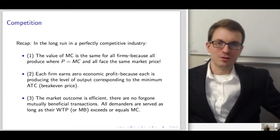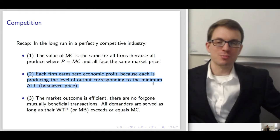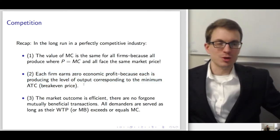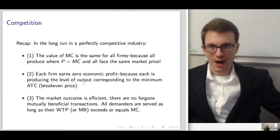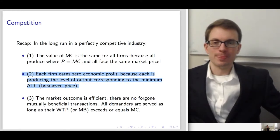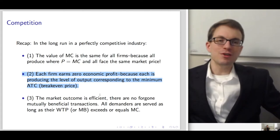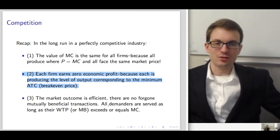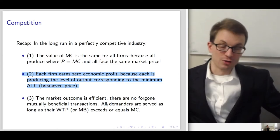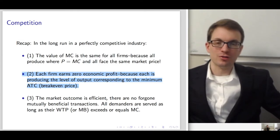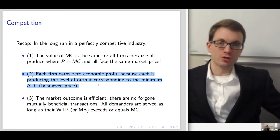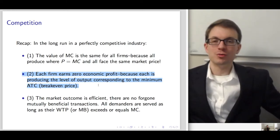As a consequence, in the long run each firm has zero economic profit, producing at the level corresponding to its break-even point — the minimum of average total cost. We get this equality: price equals marginal cost equals average total cost in the long-run equilibrium. The market outcome is efficient; there are no foregone mutually beneficial transactions, and all demanders are served as long as their willingness to pay is higher than marginal cost. Total surplus is maximized with the competitive equilibrium.